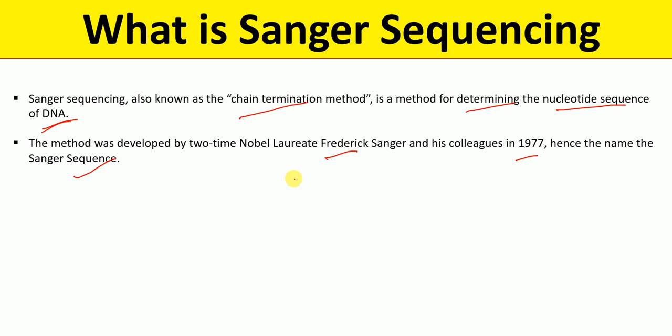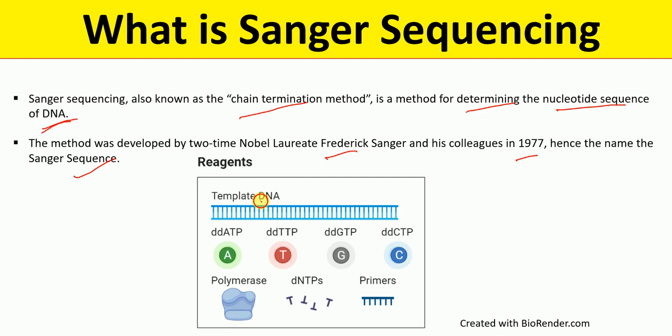What are the different reagents required in Sanger sequencing? We require template DNA, ddNTPs (dideoxy NTPs) that include ddATP, ddTTP, ddGTP, and ddCTP. These ddNTPs are fluorescently labeled with different colors — green for ddATP, red for ddTTP, blue for ddCTP, and so on. We also require DNA polymerase, dNTPs, and primers.